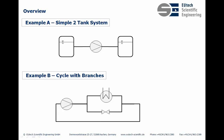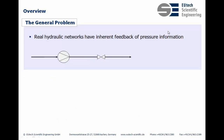So what is so special about these two systems to make a complete webinar about it? The general problem is that in reality hydraulic networks have an inherent feedback of the pressure information. If you have a pump with a downstream valve and you close the valve, somehow the mass flow in the pump will be reduced. How does the pump know about it? The pump knows about it through the pressure information — there is an inherent feedback of this pressure information.